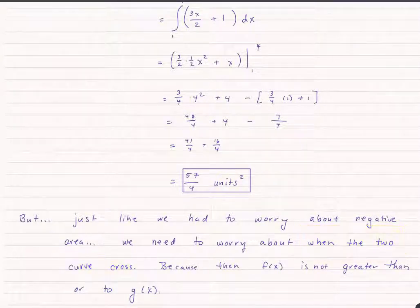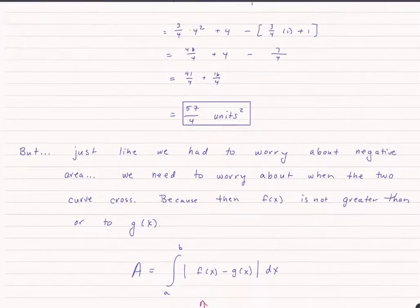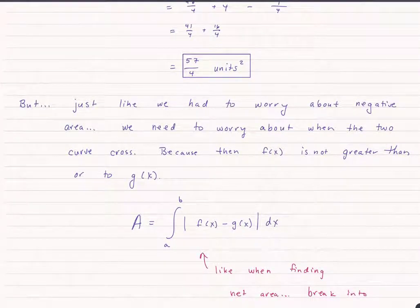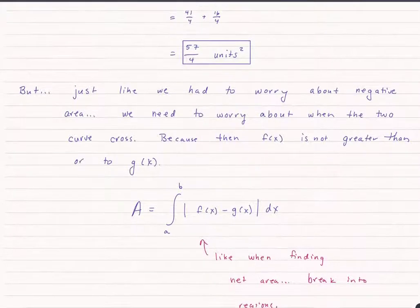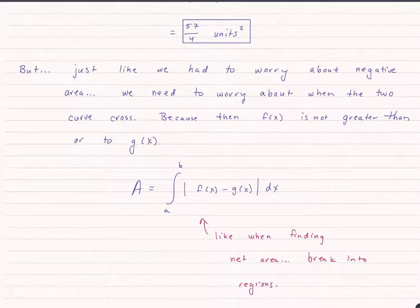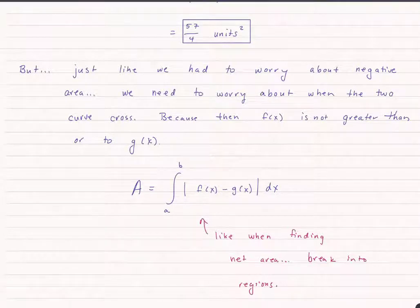When two curves cross, f of x is not going to always be on top. So what we will do is take the absolute value of f of x minus g of x. This is a lot like what we did when we found net area. We took the absolute value, and just like we did before, we're going to have to break this up into regions to calculate this.